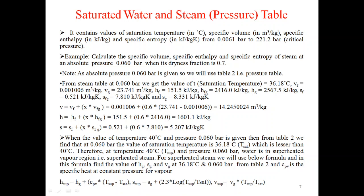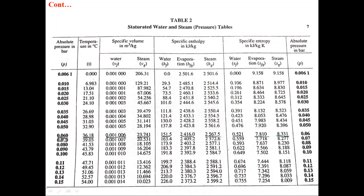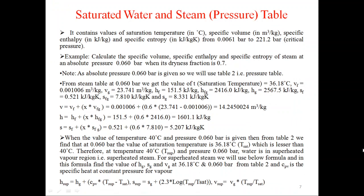When the value of temperature 40°C and pressure 0.060 bar is given, from Table 2 we find that at 0.06 bar the saturation temperature is 36.18°C, which is less than 40°C. Therefore, at temperature 40°C and pressure 0.06 bar, water is in the superheated vapor region, that is superheated steam. For superheated steam, find the values of HG, SG, and VG at 36.18°C and 0.060 bar from Table 2.